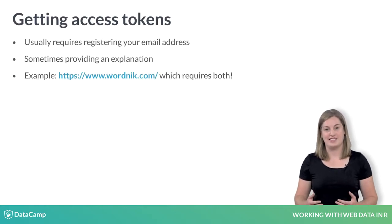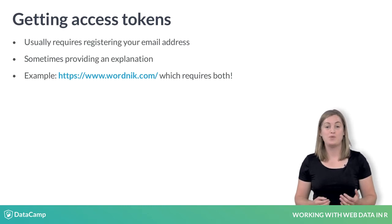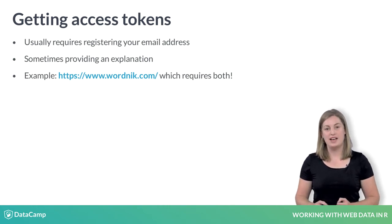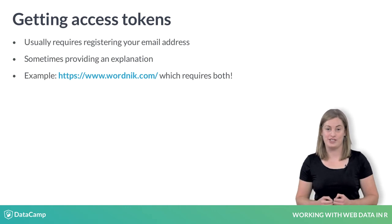Getting an access token is normally pretty simple and tends to require registration with the API you're trying to use. An example we're going to play around with is WordNIC, an online dictionary service that contains a ton of interesting metadata about English language words. Their service requires an access token, which you gain by filling out a form explaining what you're trying to do and giving them your email address, so they know who to contact if you break their service.